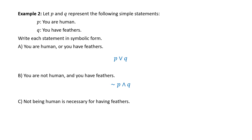'Not being human is necessary for having feathers.' 'Necessary' suggests we use an implication. P is 'you are human,' so not being human is ∼P. Notice the symbolic form is Q → ∼P — having feathers implies you are not human. Notice that the order of the symbolic representation is not the same as the order of the phrases in English.